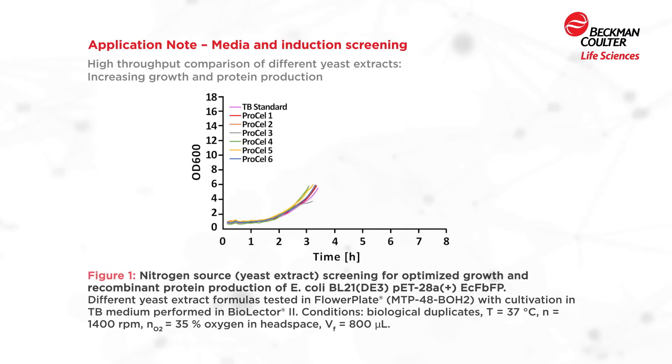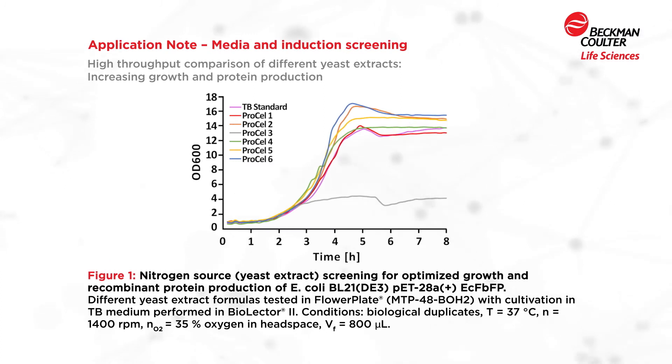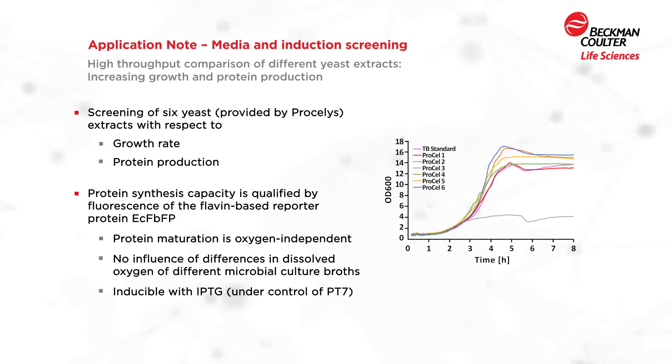In the first experiment on these different TB media, E. coli growth was observed by the online calibrated OD measurement, which you can see here in Figure 1. You can see that the different nitrogen sources lead to different optical densities. But what's even more interesting is protein production in these different media.